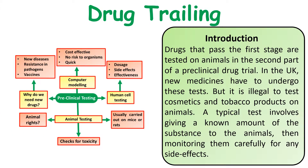Drugs that have passed the first stage are then tested in the second part of the preclinical trials - testing drugs on animals. In the UK, medicines have to undergo these tests. It is illegal for cosmetics and tobacco products to be tested in this way now. A typical test involves giving a known amount of a substance to an animal, usually a small mouse or a rat, and monitoring the side effects. We use mice and rats because they are genetically very similar to humans.